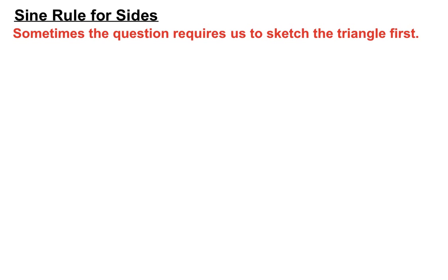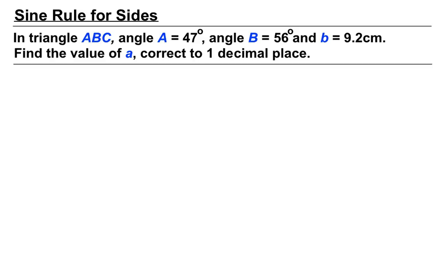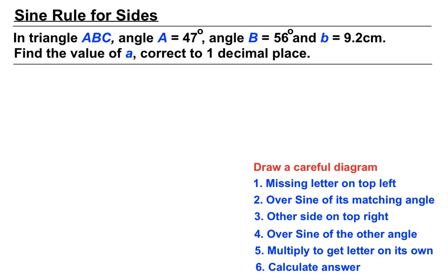Sometimes the question requires us to sketch the triangle first. We'll be given a whole bunch of information and we'll have to process that into a diagram first. Let's see how we do that. We have a triangle ABC with various angles and one side given to us, and we have to find one of the other sides. Before we start, let's draw a careful diagram, because that's going to be the basis of our working out.